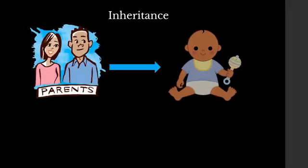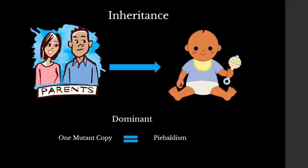Since piebaldism is the result of a genetic mutation, which is a permanent change in one of the genes in the nucleus, it can be inherited or passed from parent to children. It is a dominant genetic disorder so you only need one copy of the mutated gene to get the piebaldism disease.